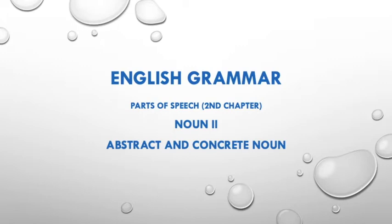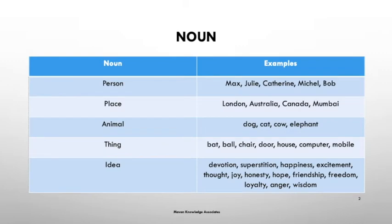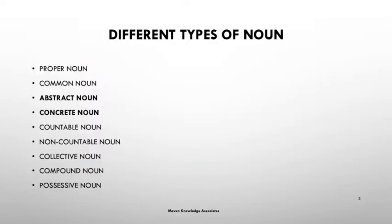First of all, if you are not aware what a noun is — a noun is the name of a place, person, thing, animal, or idea. These are all examples: the name of a person, name of a city, name of a place, name of an animal, things, and ideas.